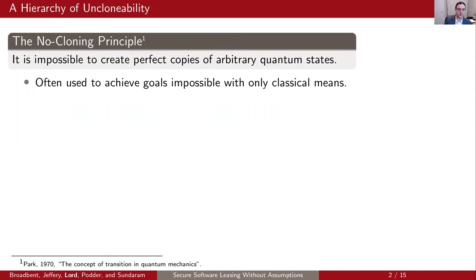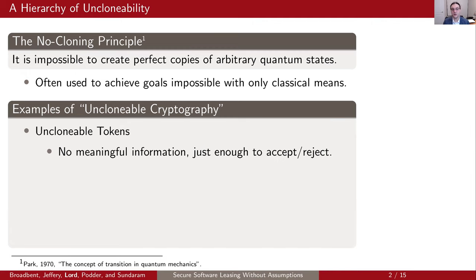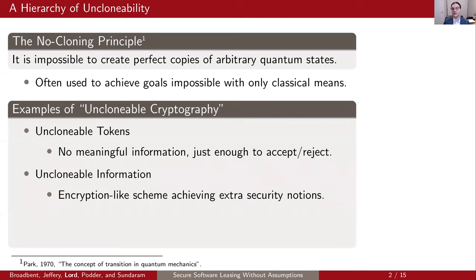The no-cloning principle is quite a quantum phenomenon. In the classical setting, adversaries, eavesdroppers, and any party can just keep copies of classical information that is exchanged back and forth. This is not quite true in the quantum setting, and this gives rise to a whole lot of unclonable cryptography. Perhaps the most famous examples are unclonable tokens — quantum states that contain no meaningful information, just enough so that a receiver can either accept or reject the token. We can also talk about unclonable information: encryption-like schemes that achieve some extra security notion tied to the no-cloning principle.